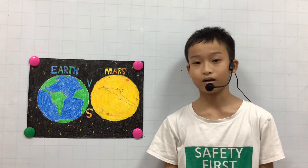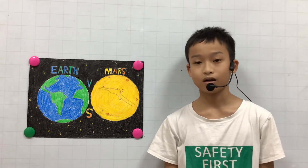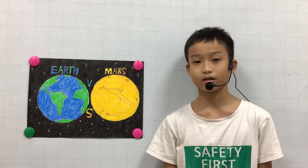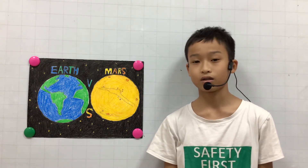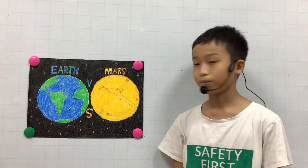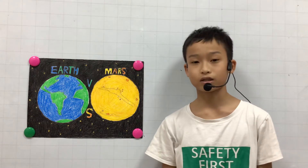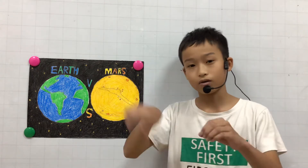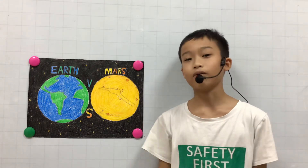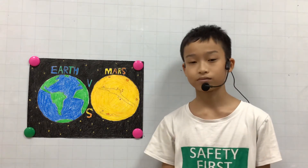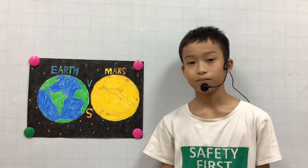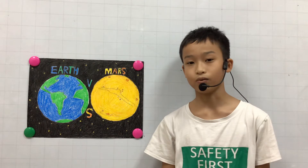Earth and Mars are similar in these ways. They are both in the solar system and they orbit around the sun.